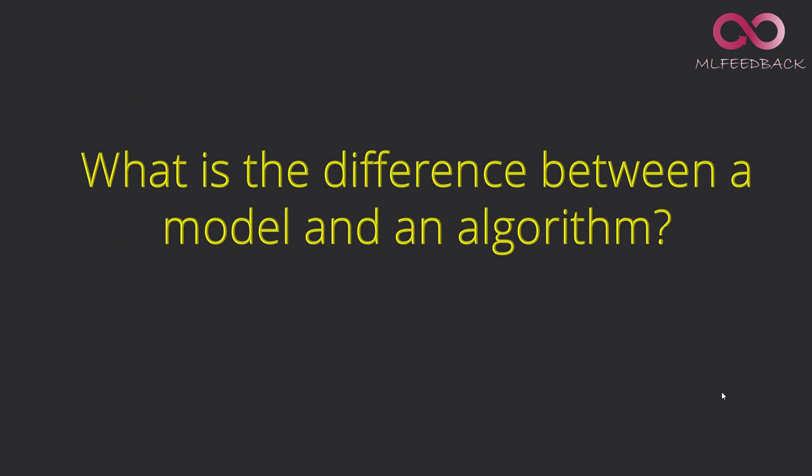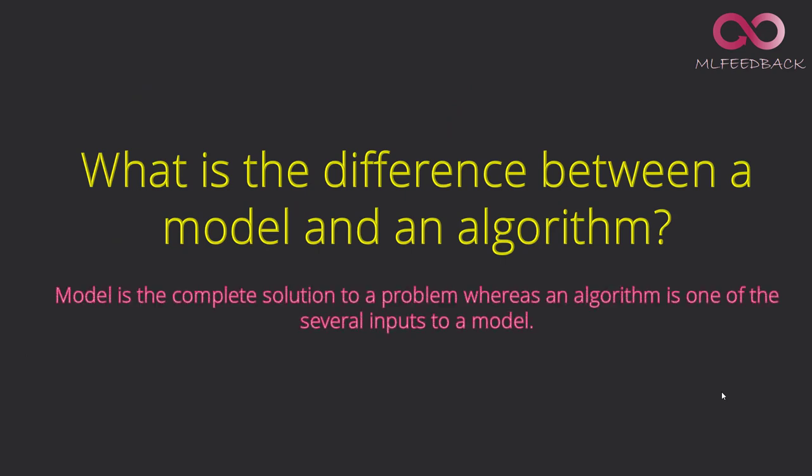So, what is the difference between a model and an algorithm? Model is a complete solution to a problem, whereas an algorithm is one of the several inputs to a model. This is Sai, signing off.